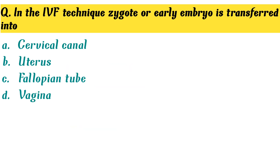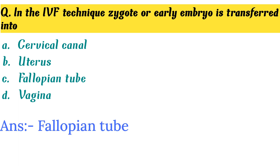In the IVF technique, the zygote or early embryo is transferred into — Option C. Fallopian tube is the correct answer.